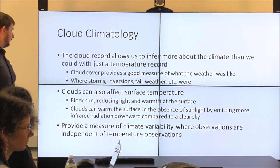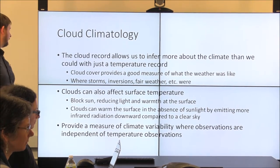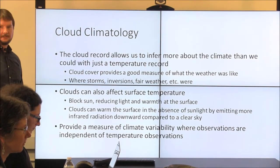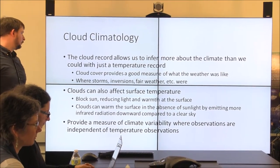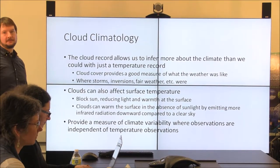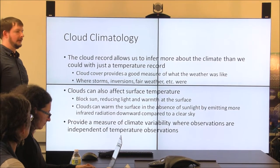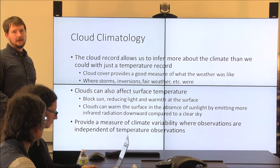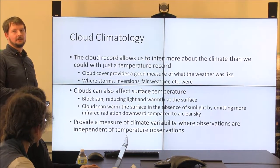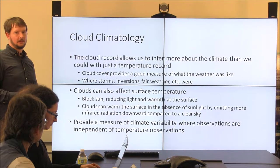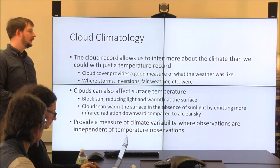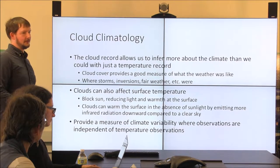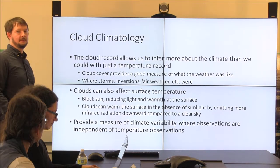Clouds are important not just because they tell you what's going on where, but because they can affect and feed back on the surface temperature. Clouds can obviously block the sun, reflect light, and cool the surface. But they can also warm the surface in many cases — like at night or in the Arctic night especially — where you have a strong downwelling infrared signal from the mid-levels of the troposphere. So the feedbacks are interesting, go in different directions, and need to be studied carefully.